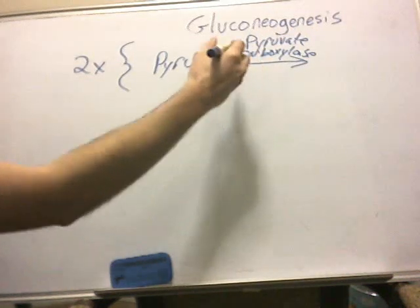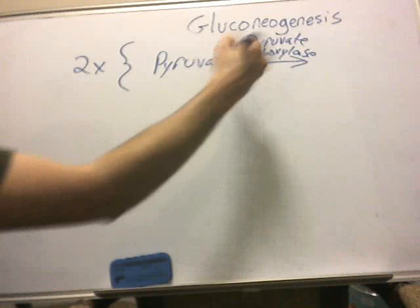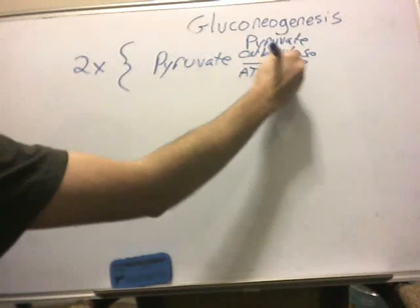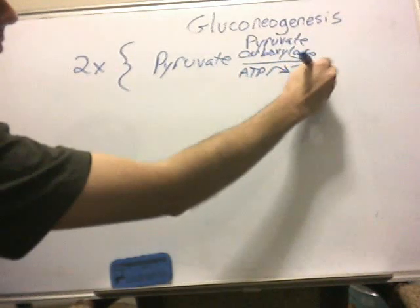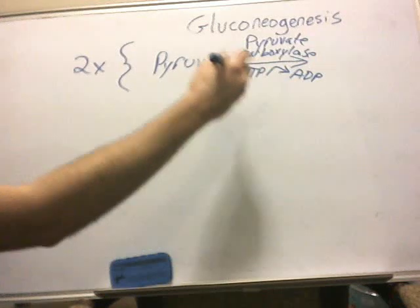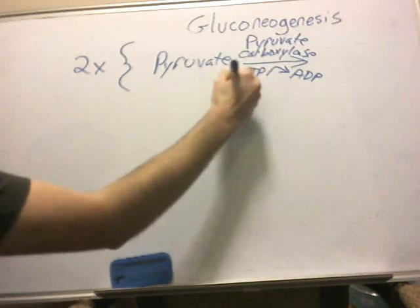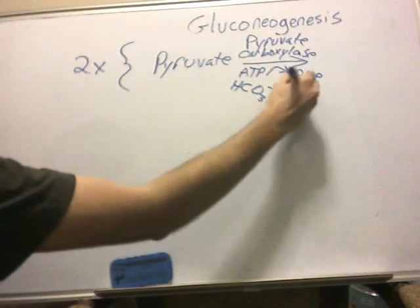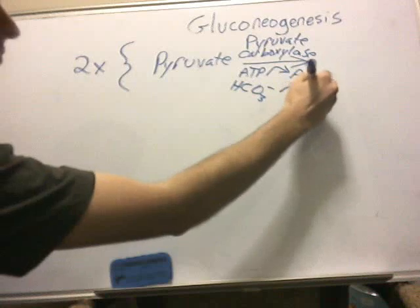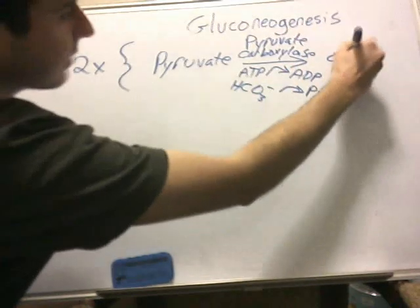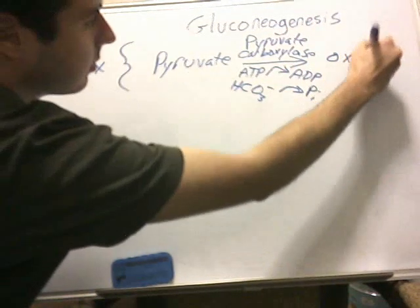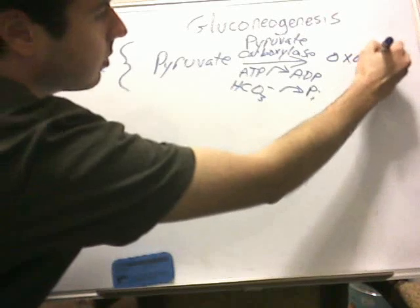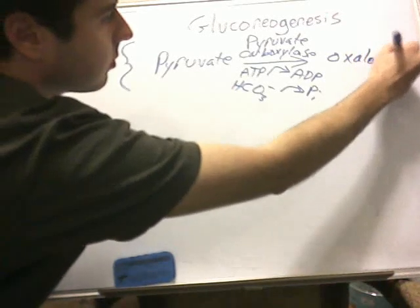We're also going to have an ATP going to an ADP, and we're going to have a carboxylic group added. That's going to go to inorganic phosphate, and then we get oxaloacetate.